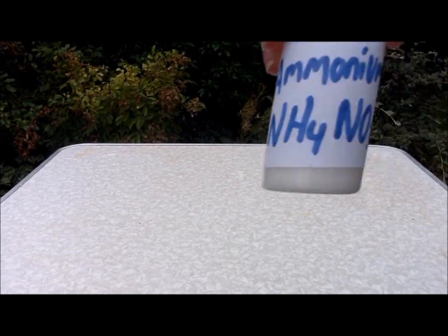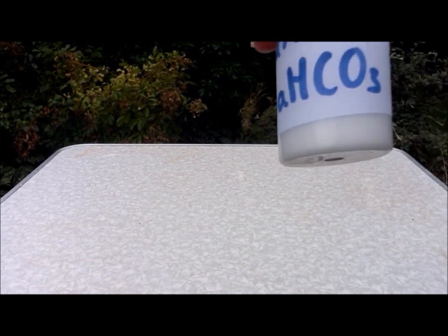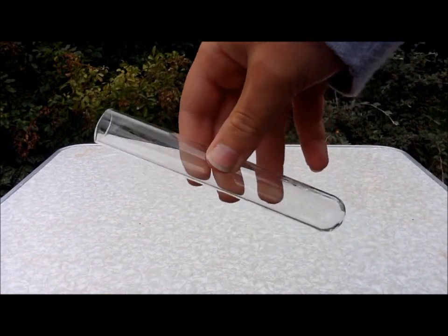Okay, so for the second method of making ammonia, things you need are ammonium nitrate and sodium bicarbonate, which is just baking soda. Once again, a test tube rack and a test tube.